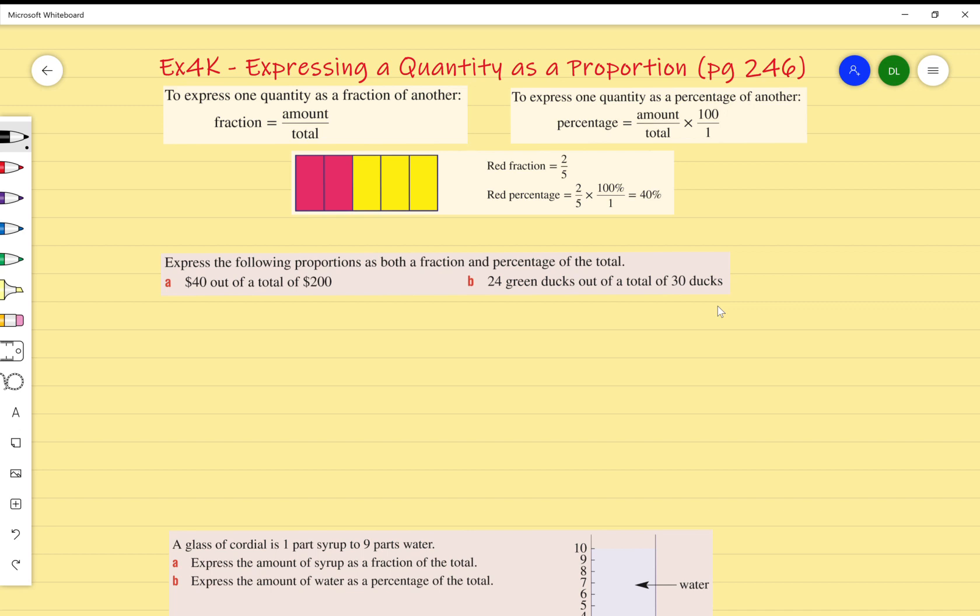Hey everyone, today we're going to go over exercise 4K, which is expressing a quantity as a proportion. To express one quantity as a fraction of another is basically what we're talking about with proportions. However, we can also talk about one quantity as a percentage of another, but we'll focus on the fraction part first.